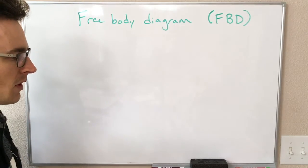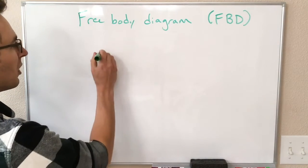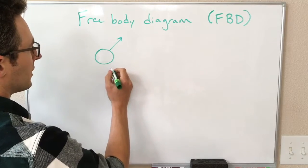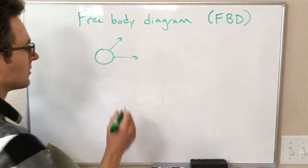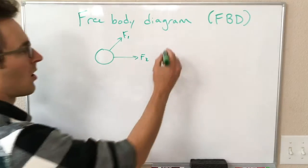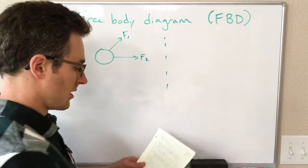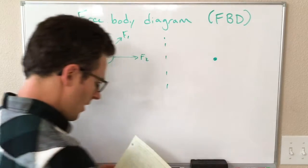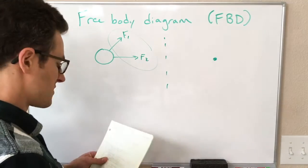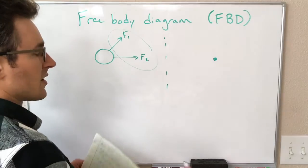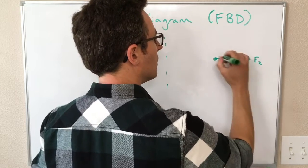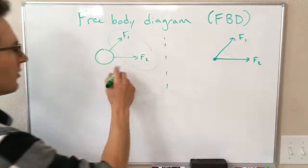Let's do a quick example. Say I have a ball and there's a force on it that's up and to the right, and a force on it that's just to the right. So we don't know what these forces are, but here's how we draw a free body diagram. First we draw the object as a point. Next we identify all the forces and their directions — we're told there are these two forces and those are the only forces on the object. Step three: draw the forces as vectors from the object point, so we draw F1 and F2 like this.